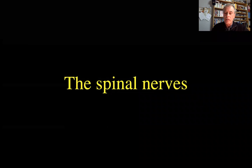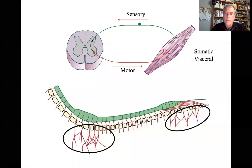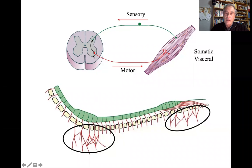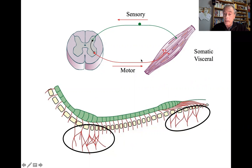Now the spinal nerves. The spinal nerves are formed by motor and sensory fibers, efferent and afferent. As we have seen, they also include sympathetic nerve fibers that jump from the sympathetic trunk through the communicating rami and incorporate in the spinal nerves.